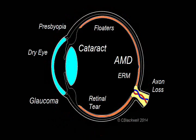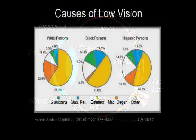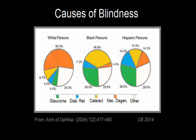Now that we have mentioned several eye diseases, let us close by looking at what are the chances they will affect us. Causes of low vision — that is, less than 20/40 — are dominated by cataract, which is generally fixable by surgery. Causes of blindness, vision of 20/200 or less, are dominated by macular degeneration and glaucoma. We will cover all these topics in this series.